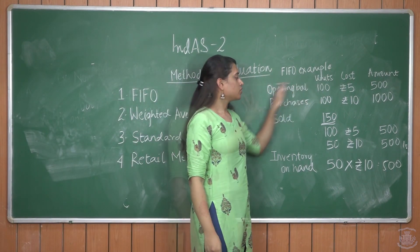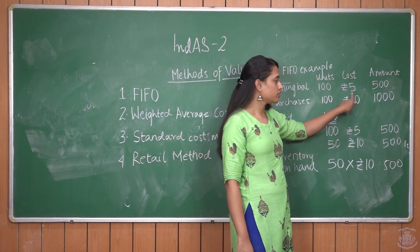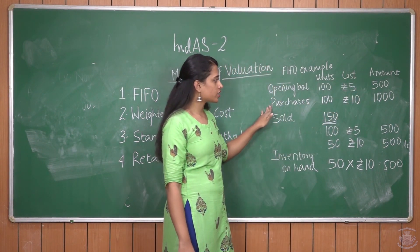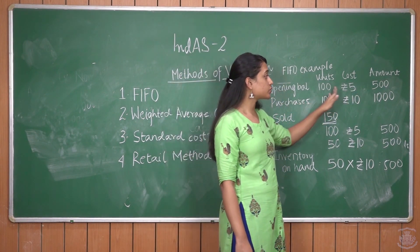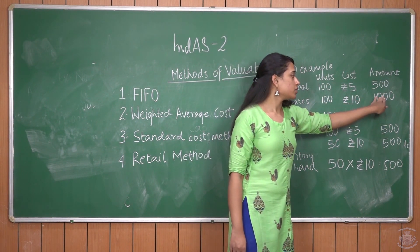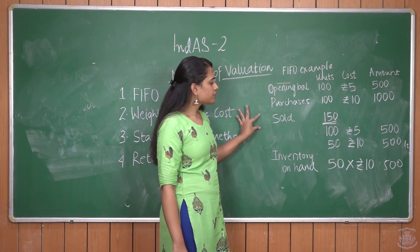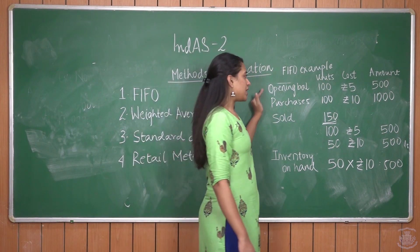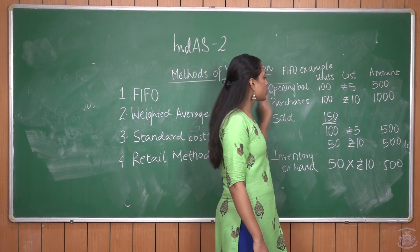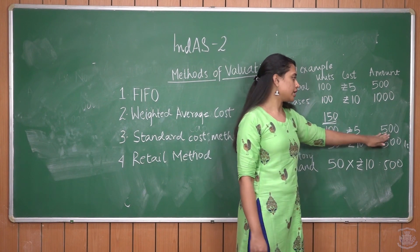To understand FIFO, consider this example. Opening balance: 100 units purchased at Rs. 5, total amount Rs. 500. Further purchases during the year: 100 units at Rs. 10, total amount Rs. 1,000. For sales made during the year, as per FIFO, goods purchased first are sold first. Hence, the 100 units from opening balance are sold first at a cost of 100 × Rs. 5 = Rs. 500.